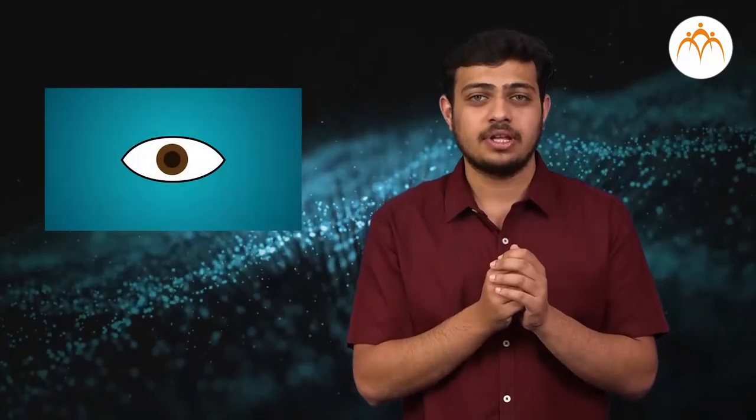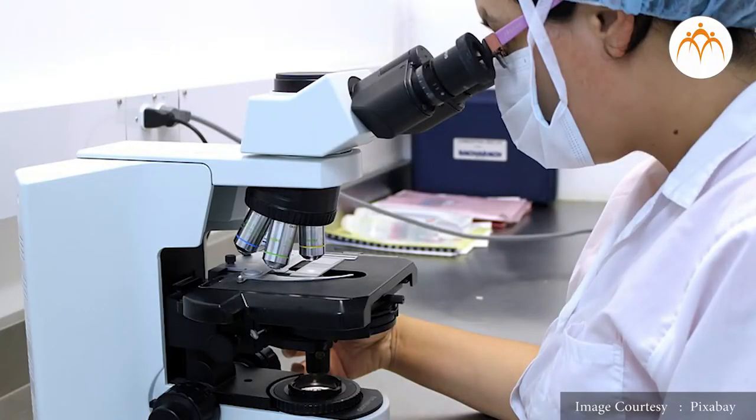Cells are very minute in size which cannot be seen with naked eyes. The compound microscope is used for observation of these cells.